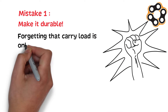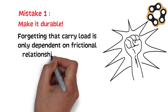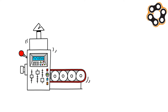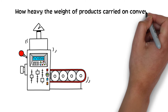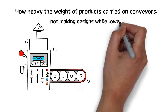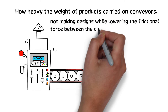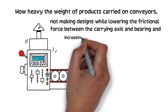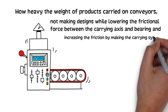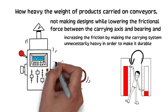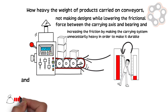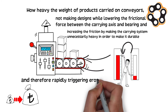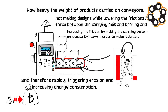Forgetting the carry load is only dependent on the frictional relationship in horizontal conveyors — how heavy the weight of products carried on conveyors — and not making designs that lower the frictional force between the carrying axis and bearing. Instead, increasing friction by making the carrying system unnecessarily heavy in order to make it durable, therefore rapidly triggering erosion and increasing energy consumption.